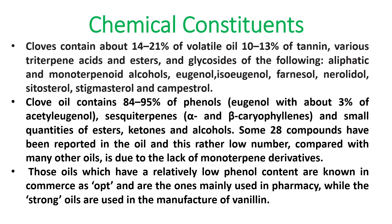Now we will see what are the chemical constituents of cloves. Cloves contain about 14 to 21% of volatile oil, 10 to 13% of tannin, various triterpene acids and esters, and glycosides of the following aliphatic and monoterpenoid alcohols.